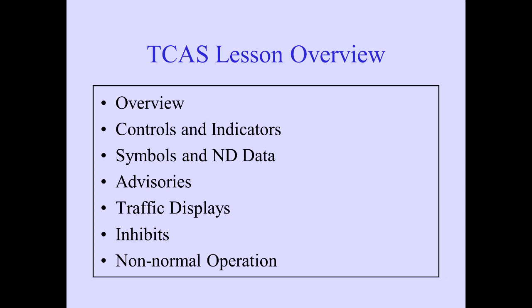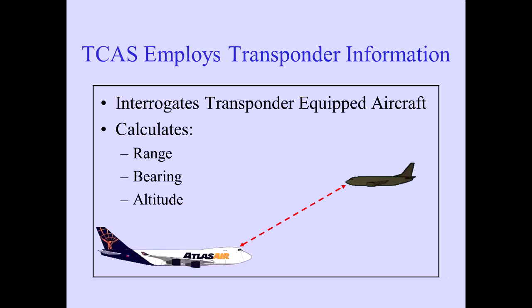In this module, we will discuss TCAS-2, the Traffic Alert and Collision Avoidance System-2. Let's begin with a brief overview. TCAS is an independent onboard alerting system. TCAS interrogates transponder-equipped aircraft and calculates range, bearing, and altitude. TCAS-2 provides traffic separation by pitch commands only.